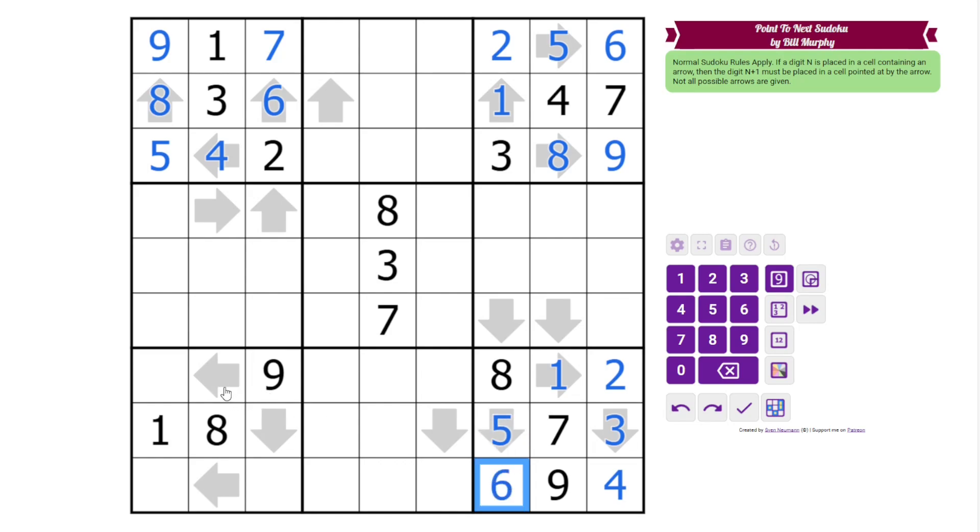And down here we need 2, 3, 4, 5, 6, 7. These can't be 4, so this is 4, 5. This can't be 2, 3, so this 2, and then this is 6, 7. So those are all the corner boxes done.